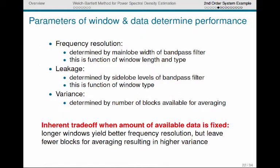So now we know from previous videos that the parameters of the window and the length of the data basically determine the performance of the power spectral density estimator. The frequency resolution is determined by the main lobe width of the bandpass filter, if we use our filter bank interpretation, and this is explicitly a function of window length and window type. It's primarily the length of the window, but the type of the window has a small effect on that main lobe width. The side lobe leakage is determined by the side lobe levels of the bandpass filter, and this is a function of window type.